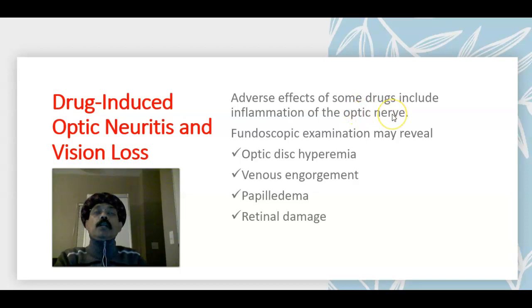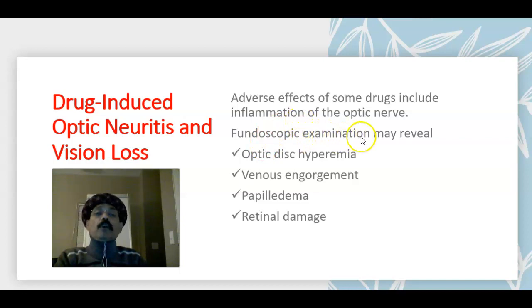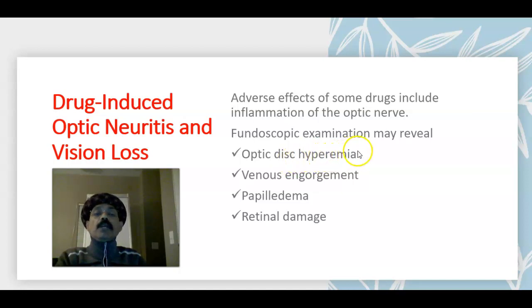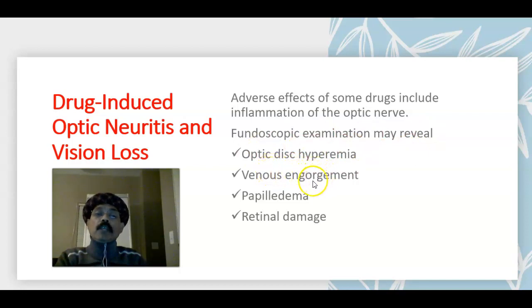The optic nerve is the second cranial nerve that carries the visual pathway to the brain. Fundoscopic examination by means of an ophthalmoscope may reveal optic disc hyperemia. The optic disc is the area where the optic nerve is attached to the retina. There will be venous engorgement around the optic disc, papilledema, and retinal damage.